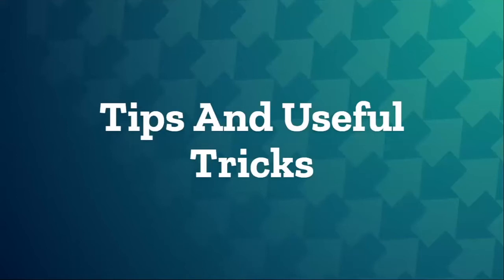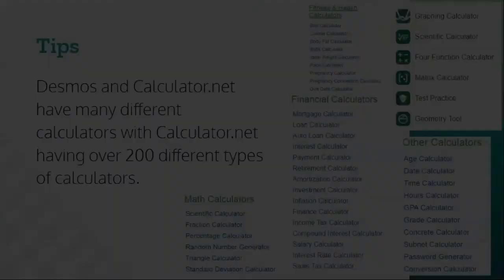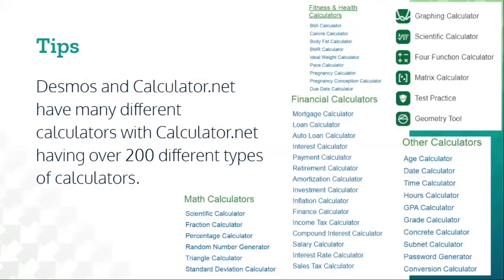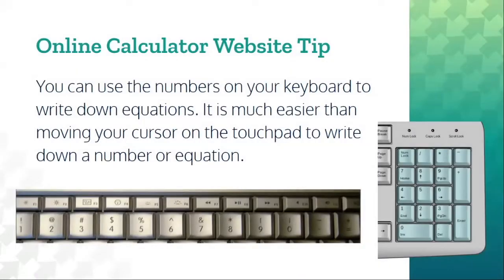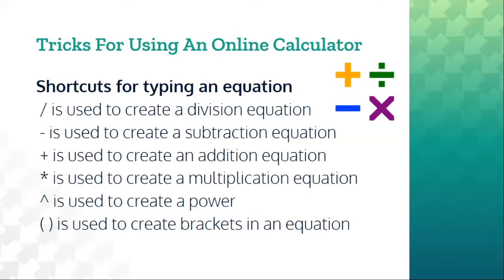Next up, we have some useful tips and tricks for using online calculators. Desmos and Calculator.net have many different calculators, with Calculator.net having over 200 types. Instead of clicking numbers on the calculator itself, you can type directly from your keyboard, which is faster and more efficient. Here are some keyboard shortcuts: the slash creates a division equation, the dash creates subtraction, the plus sign creates addition, the asterisk creates multiplication, the caret symbol creates a power, and the bracket symbol creates brackets in an equation.